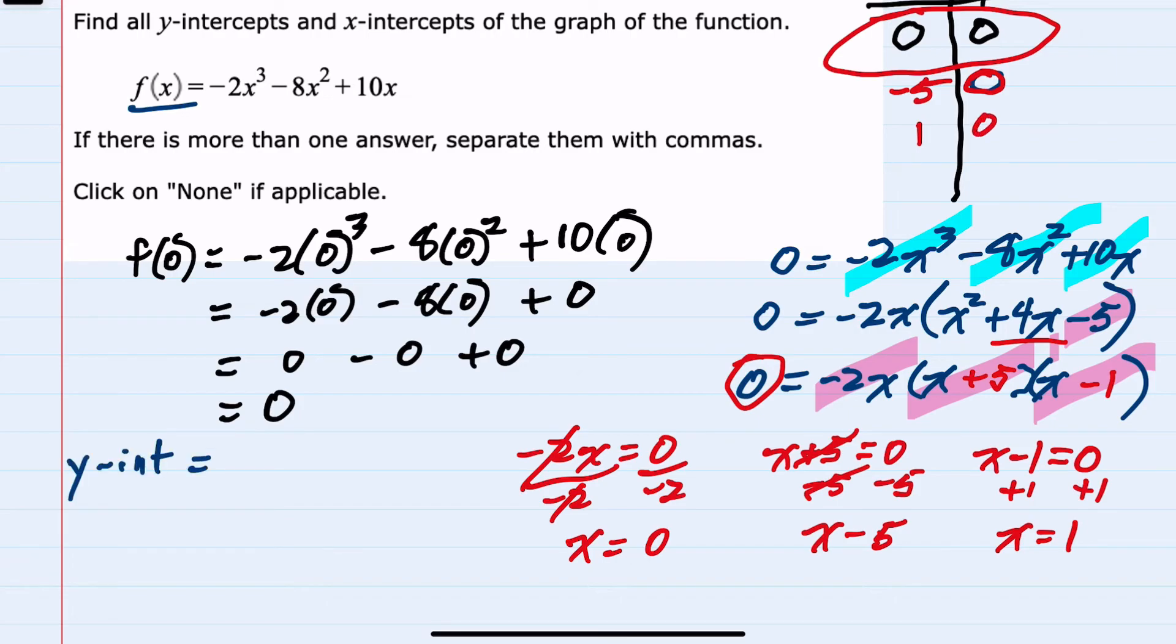So when looking for the y-intercept I found (0, 0). When looking for the x-intercepts we found three: we also have (0, 0) and (-5, 0) and (1, 0). So one y-intercept and three x-intercepts.